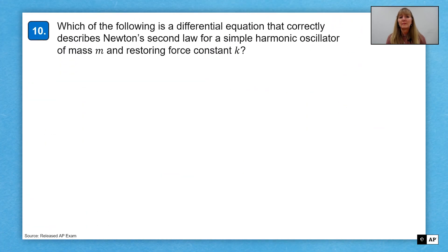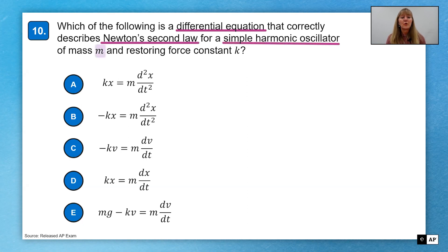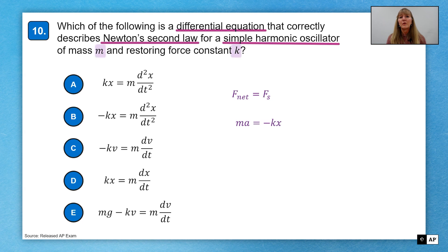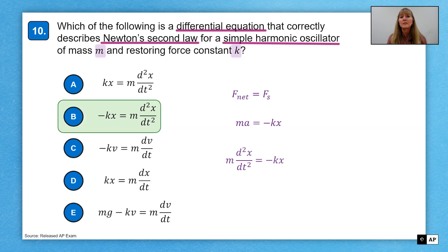All right, last one. Which of the following is a differential equation that correctly describes Newton's second law for a simple harmonic oscillator of mass M and force constant K. So here, the equation of Newton's second law lets me know where to get started, that my net force is equal to the spring force, which is causing the simple harmonic motion. My net force, according to Newton, is mass times acceleration. And Hooke's law lets me know that the spring force is equal to negative K X. I know that the acceleration is the second derivative of position with respect to time. And that is my differential equation. Notice again, when you look at the choices, you do not need to solve the differential. You just needed to write it down. And that is choice B.